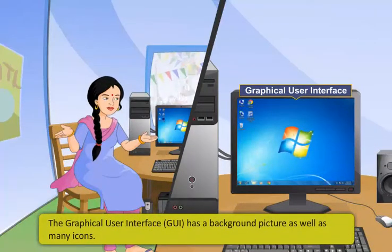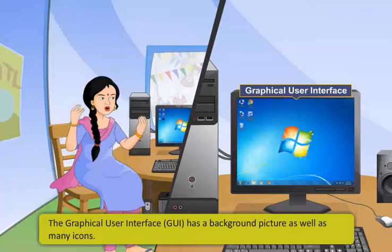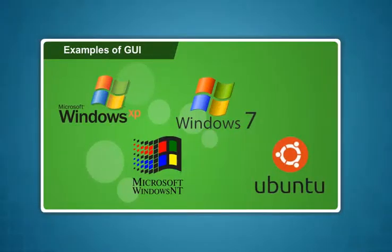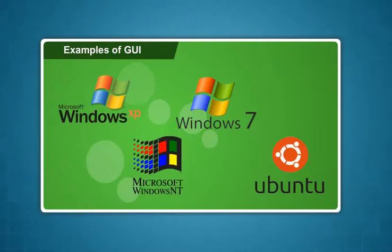A Graphical User Interface has a background picture as well as many icons. Examples of GUI are Windows XP, Windows NT, Windows 7, and Ubuntu.